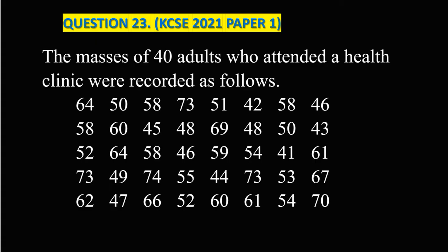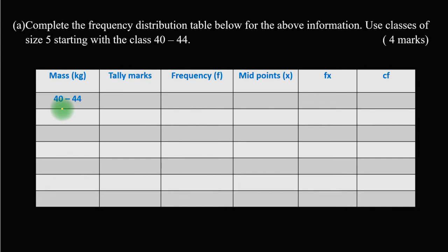We need to know from the data given the lowest mass and the highest mass, which is the range. Looking through, you can see that 41 is the lowest mass and 74 is the highest mass. We've been told to start with the class of 40 to 44, and we've been given the class size is 5.